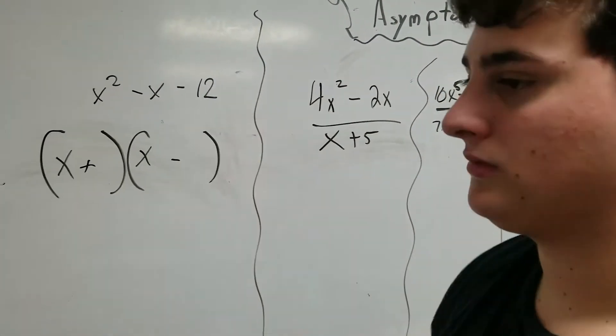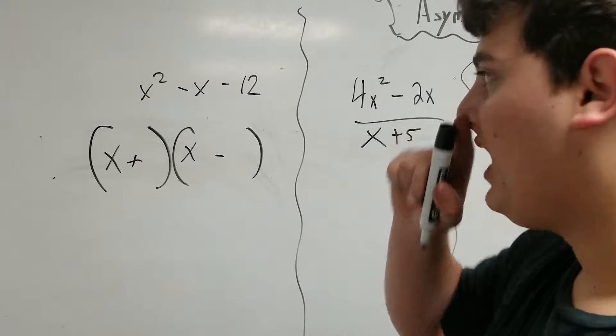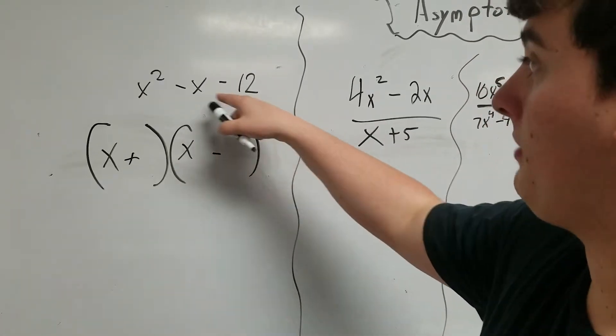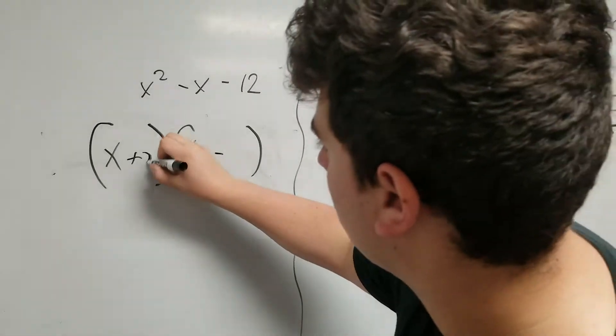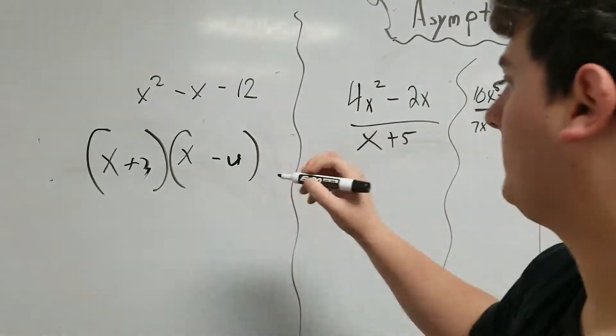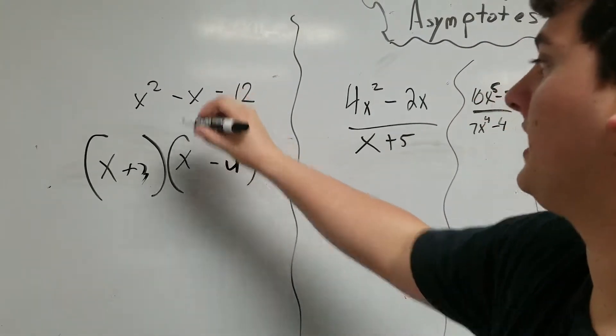I know that the two numbers that multiply to be 12 but add to be 1 is 3 and 4, with 4 being the negative because it is a negative x indeed.